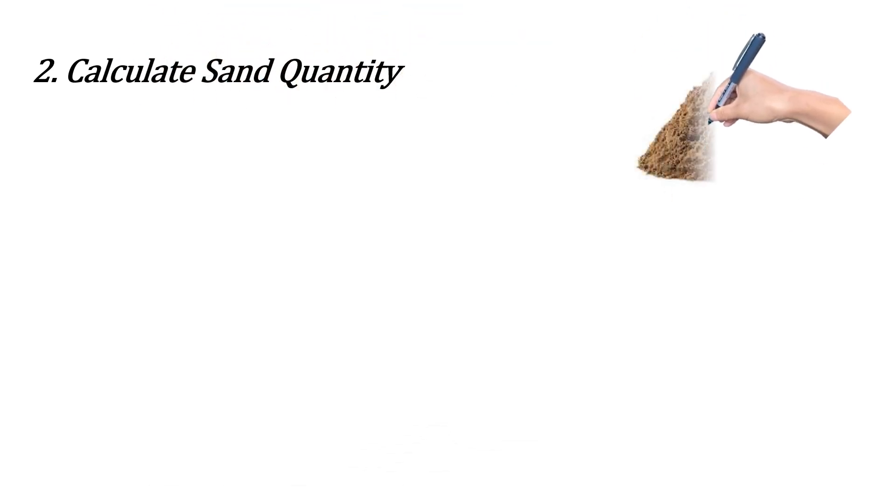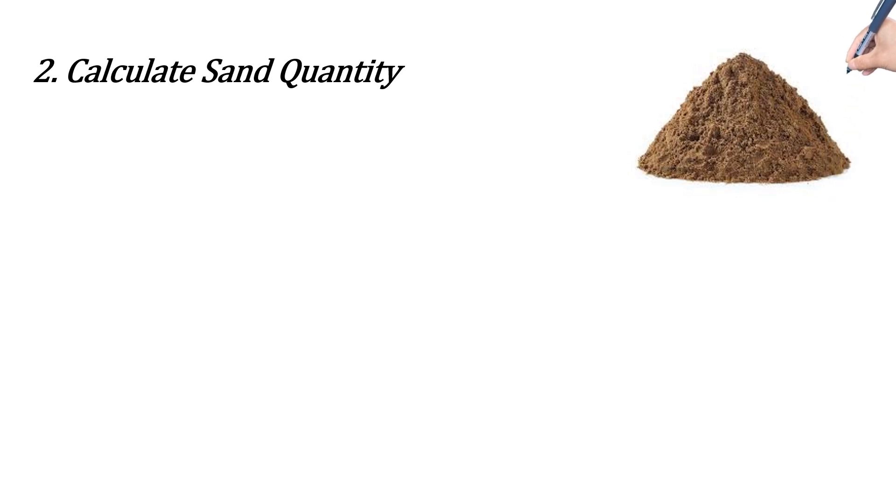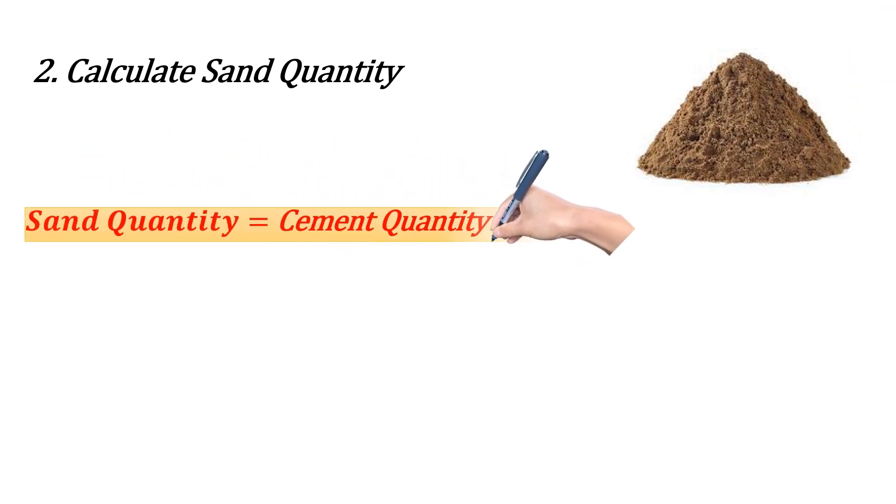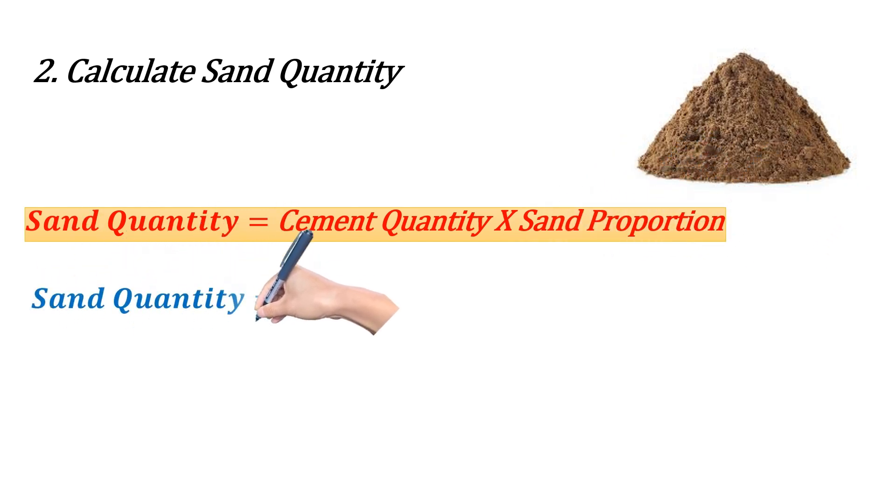Instead of doing lengthy calculations, let's use the pro technique here by multiplying cement volume with sand proportion and get sand quantity instantly. So the sand quantity is 0.3192 times 4 equals 1.276 m³.